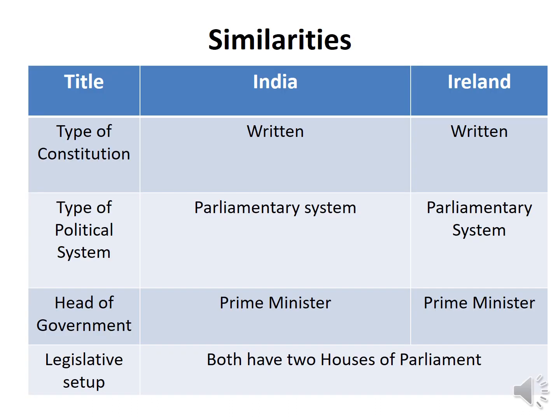What are the similarities? Both constitutions are written. Ireland as well as India have written constitutions. Only the UK and Israel have unwritten constitutions — they follow parliamentary procedures, conventions, statutes, bylaws, and orders as sources of authority. Almost all other countries have written constitutions. India's constitution is very vast with every minute detail of administration mentioned in it, while Ireland's is written but less comprehensive.